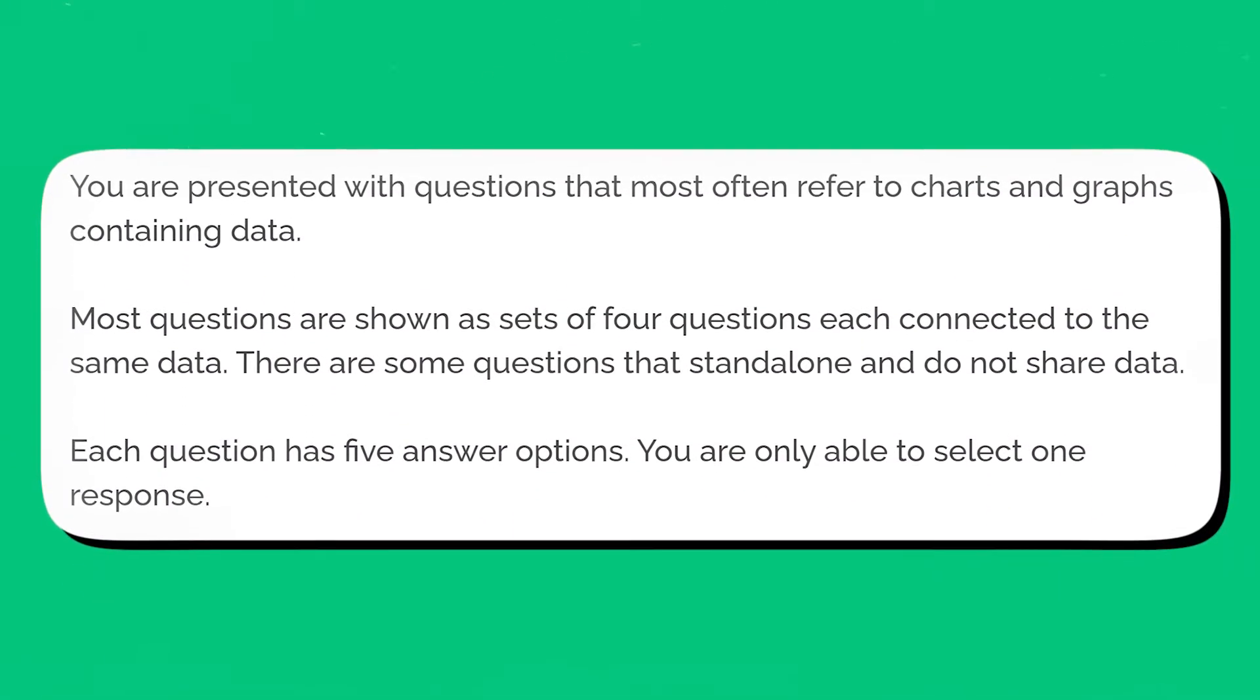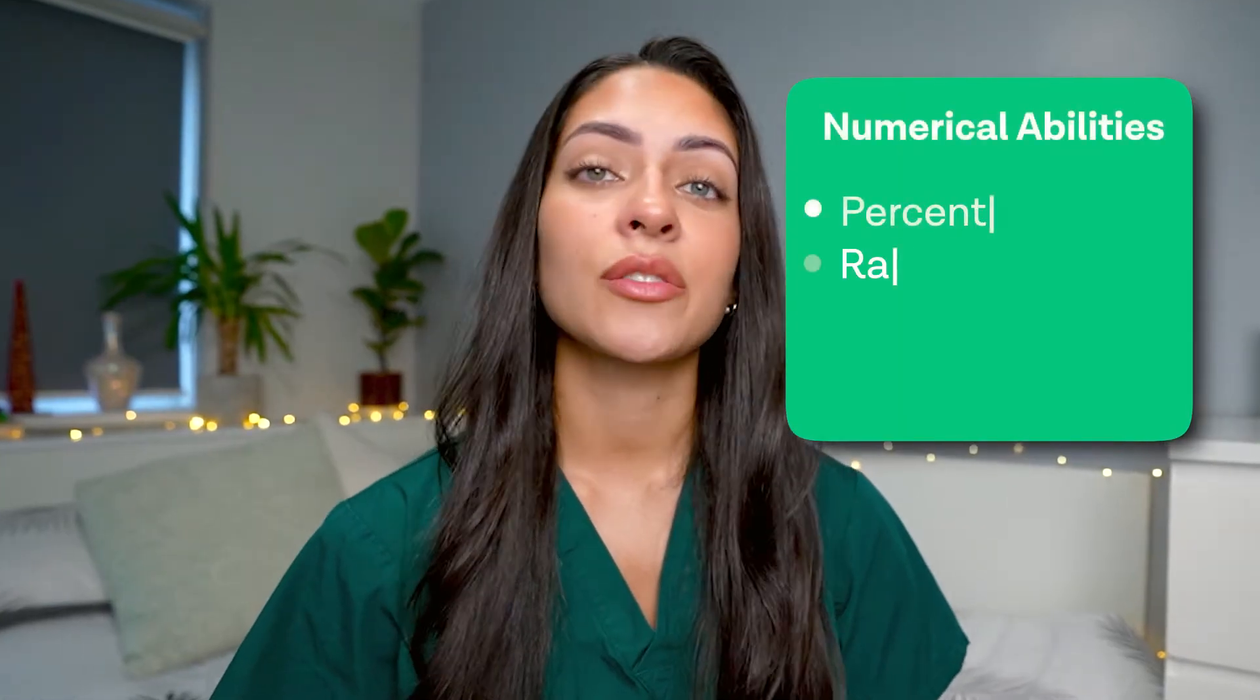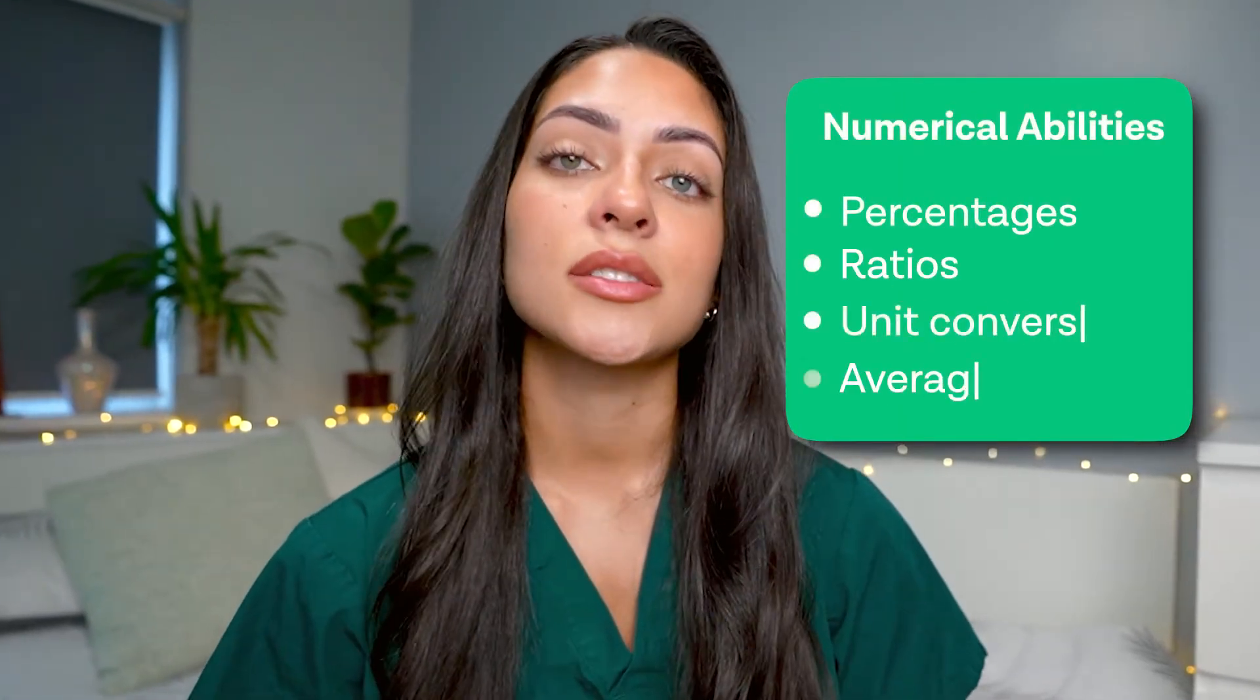In this section you will be presented with graphs and tables with data that you will be expected to interpret. You will then need to choose the correct answer out of five options presented, and arriving at the answer might require you to make multiple calculations. Quantitative reasoning questions cover a range of numerical abilities including percentages, ratios, unit conversions and averages.